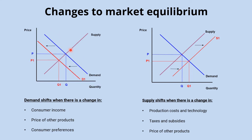On the other side, if a product goes out of fashion, demand decreases and the demand curve shifts to the left. That brings us to a new equilibrium at price P1 and quantity Q1 — a lower price and lower quantity than the original market equilibrium.